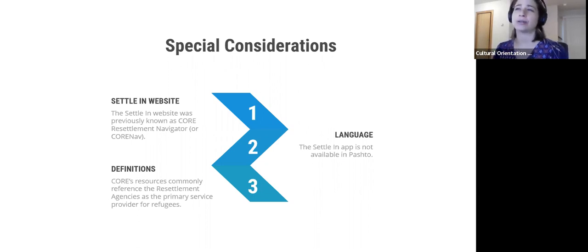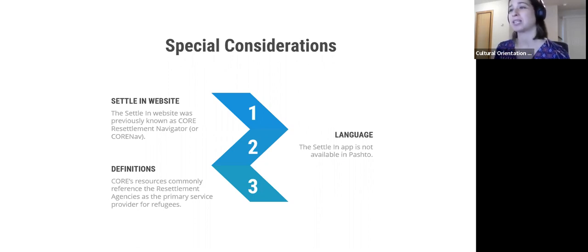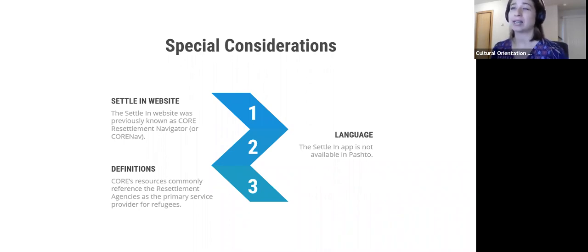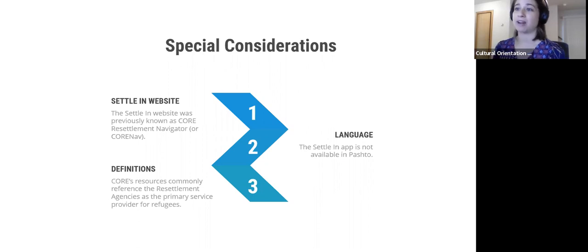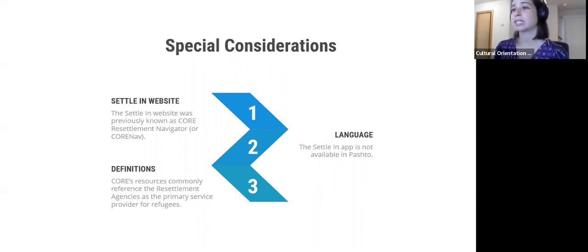Third, CORE carefully chose the language used in our sponsor-facing resources. CORE's general resources commonly reference the resettlement agency as the primary service provider. This might be confusing if you're a sponsor circle group. So while sponsors are encouraged to explore CORE's activity bank, remember to adjust the language to your context. The toolkit uses the word 'sponsors' for service providers and 'newcomers' to describe refugees, special immigrant visa holders, and humanitarian parolees from Afghanistan. This is not the case for other activities in CORE's activity bank, so be careful to change the language when using it.